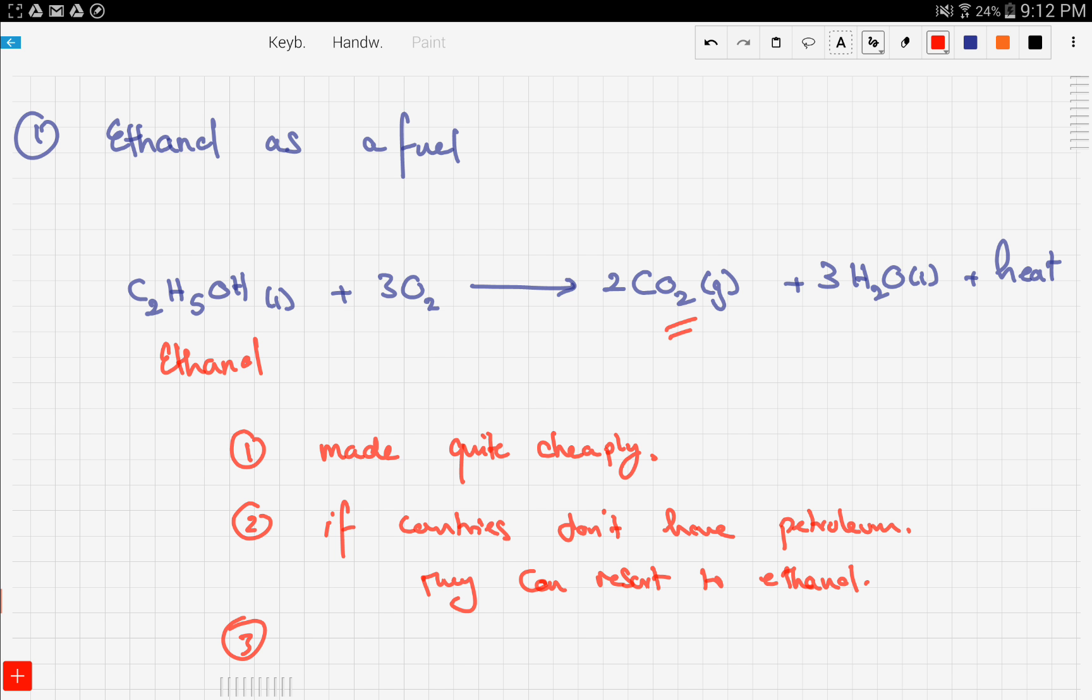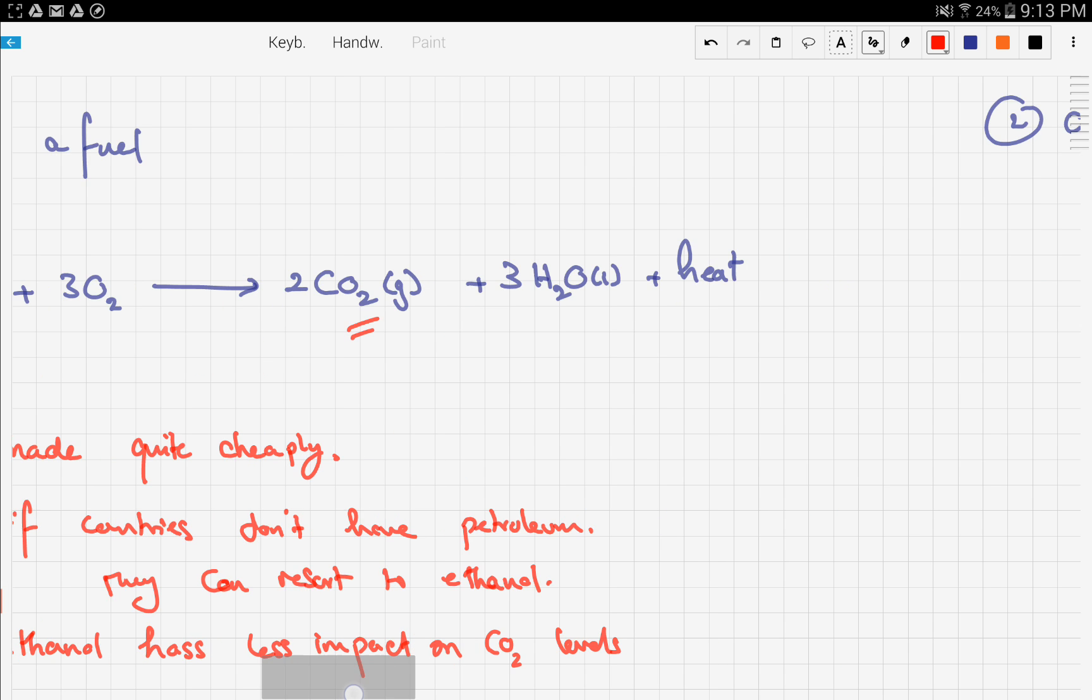The last advantage for using ethanol as a fuel is that the amounts of carbon dioxide produced here is much less than burning fossil fuels. Therefore, we're going to limit the greenhouse gas effect. Ethanol has less impact on CO2 levels. That's it for the reaction of ethanol with oxygen gas.